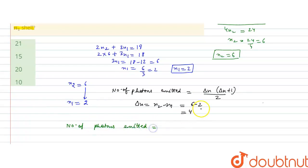That will be delta N that is 4 into delta N plus 1. 4 plus 1 divided by 2. This will give us 4 into 5 by 2. This is equals to 10.